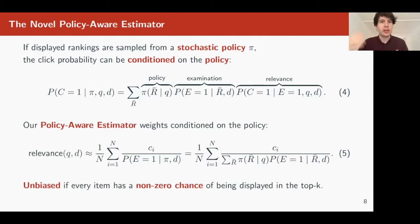The nice thing here is that this estimator is unbiased if every item has a non-zero chance of being displayed. So if this probability down here that we divide by is positive for every item, we're guaranteed to have an unbiased estimator, which is quite doable.